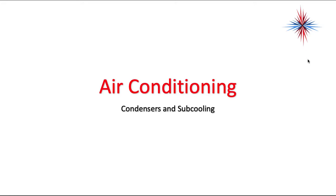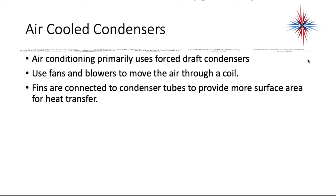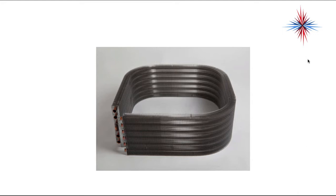In this video, which is part of the air conditioning course, we're going to be talking about condensers and sub-cooling. There are two main types: water-cooled and air-cooled. Air conditioning primarily uses forced draft condensers — in other words, air-cooled — using fans and blowers to move air through a coil. Fins are connected to condenser tubes to provide more useful surface area for heat transfer. A lot of air-cooled condensers today are made of aluminum tubing, so you have to be more careful with them.